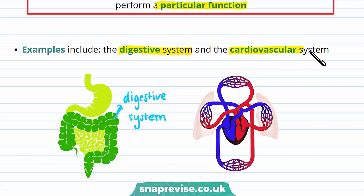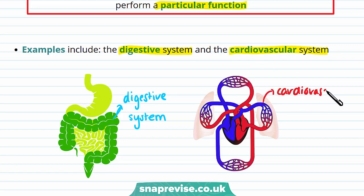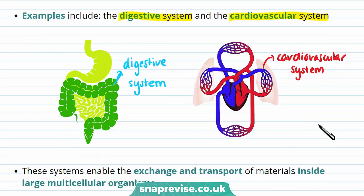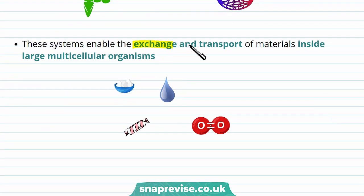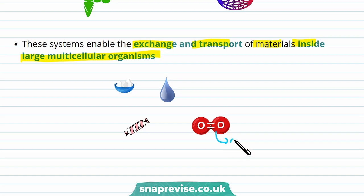Another example of an organ system is the cardiovascular system. The cardiovascular system is made up of the lungs and the heart. These work together to act as an exchange system. These systems enable the exchange and transport of materials inside large multicellular organisms, including the exchange of sugars, salts, water and oxygen.